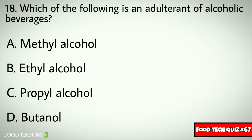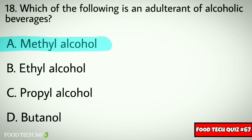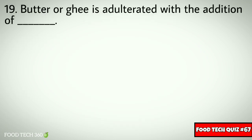Question number eighteen: which of the following is an adulterant of alcoholic beverages? Options: A) methyl alcohol, B) ethyl alcohol, C) propyl alcohol, D) butanol. Correct answer: A) methyl alcohol.